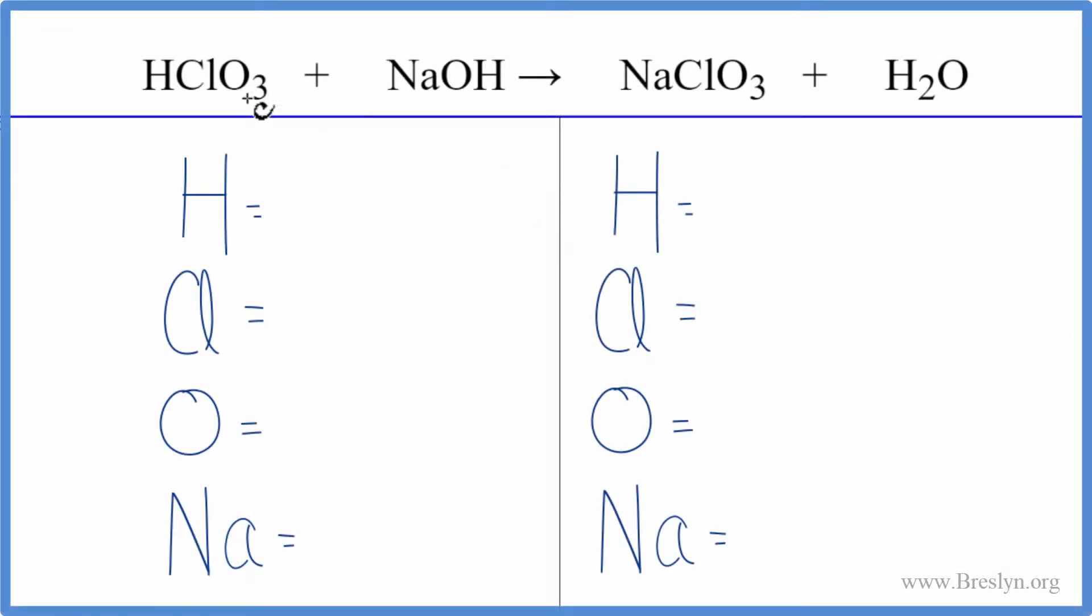So in this equation, we have a neutralization reaction: HClO3 plus NaOH, that's chloric acid plus sodium hydroxide. We get this salt here, and we get water. It's a neutralization reaction.